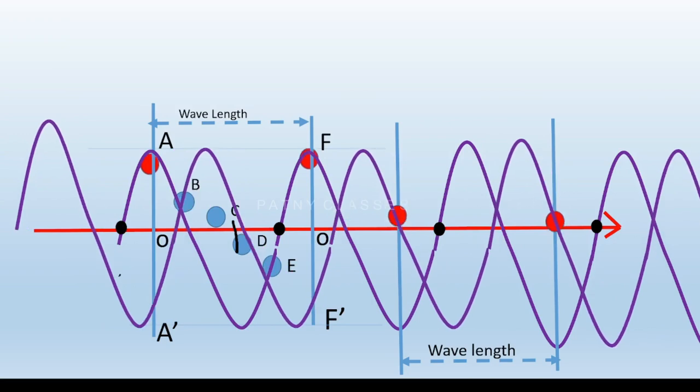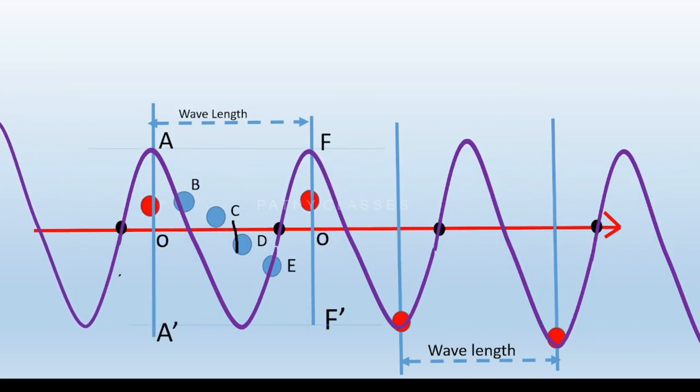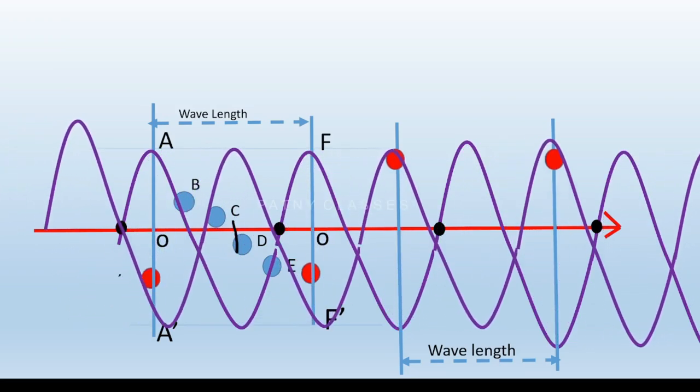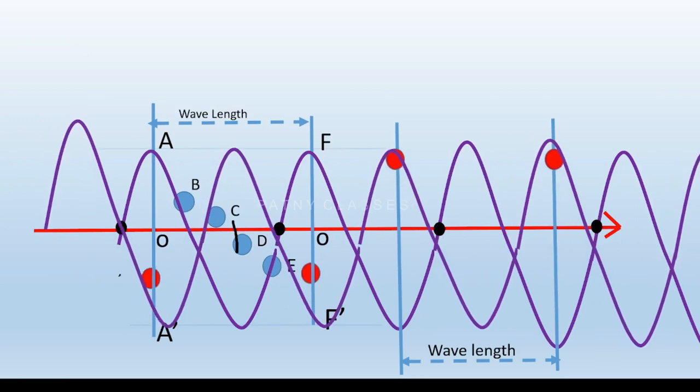So the time taken by the particle to start from point F and again come back to point F is called the time period of vibration. In case of longitudinal waves, the time span between two compressions or two rarefactions is equal to the time period. The distance between two rarefactions or two compressions is equal to the wavelength.